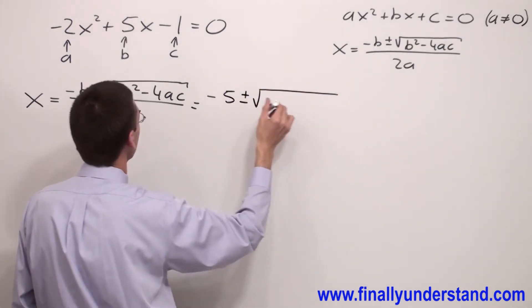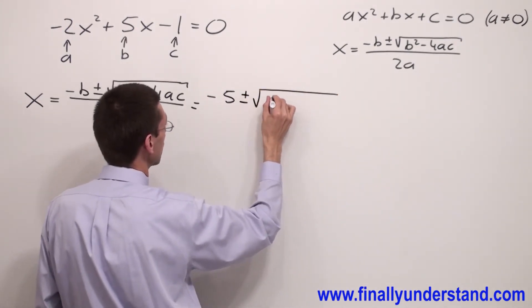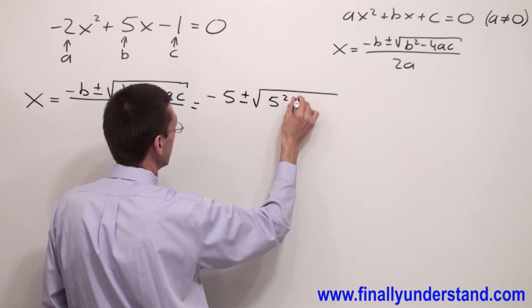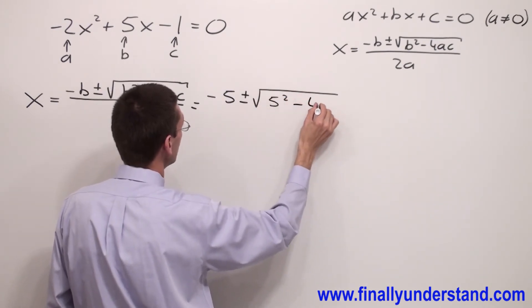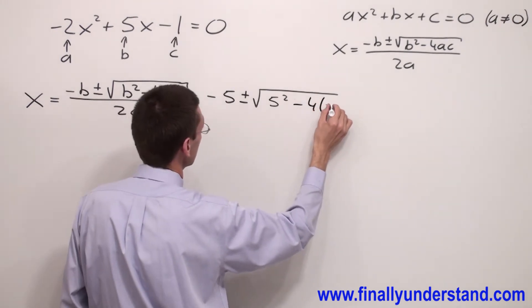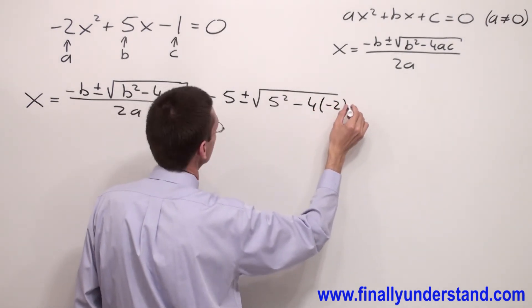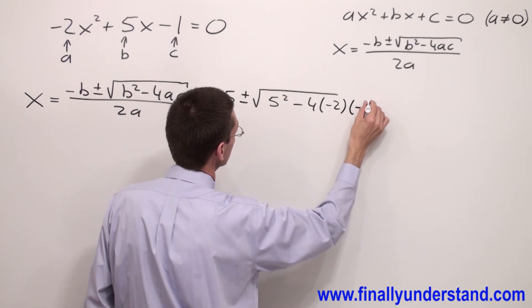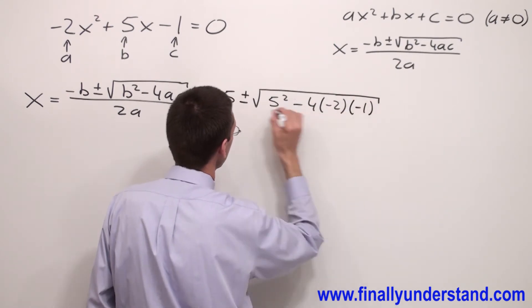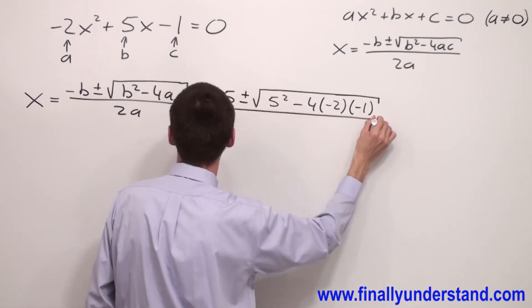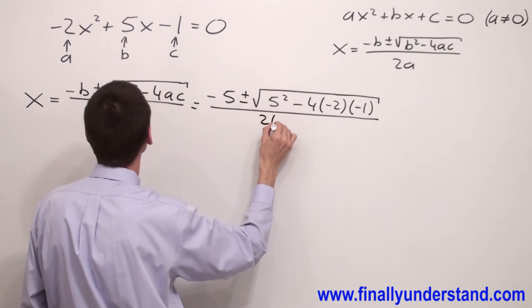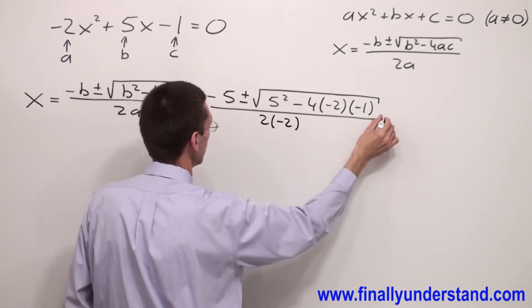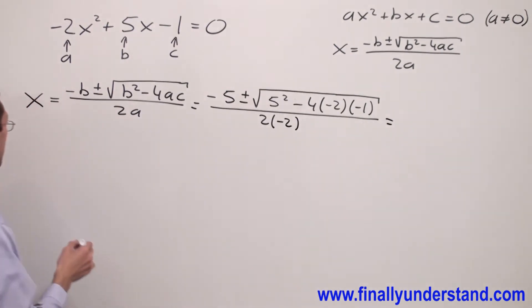and I have b squared which equals 5 squared, minus 4 times a which is equal to negative 2, times c which is equal to negative 1. Everything is over 2 times a which is equal to negative 2.